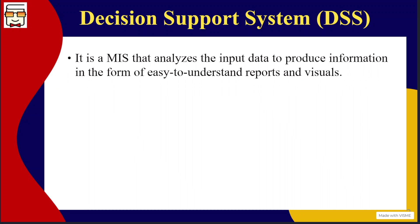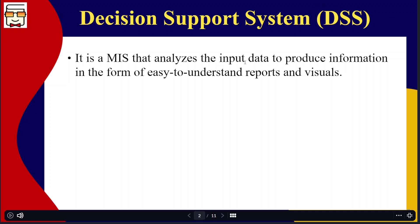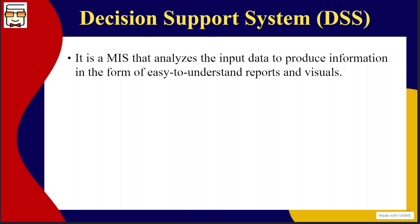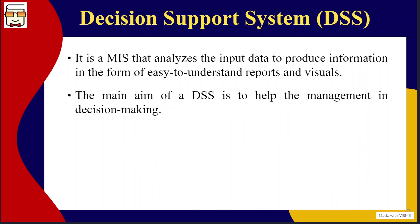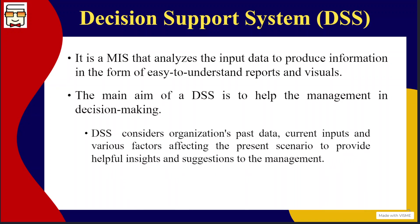A decision support system is basically an information system that helps the management in taking decisions. It is a management information system that analyzes and processes input data so that it can produce useful information in a form that is easy to understand, visually presentable, enabling quicker and more correct decisions. It is created to support the management in the process of decision making for their organization.